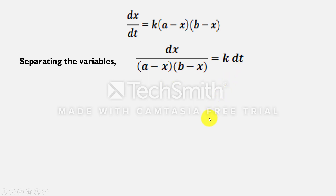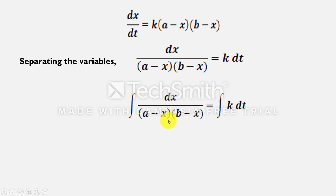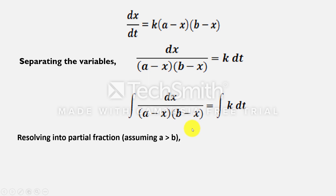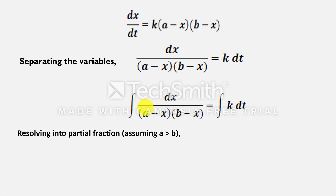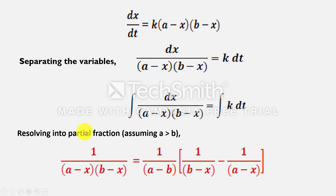Now we have to integrate the equation. In the denominator it is the product of (A−x)(B−x), so first we have to resolve into partial fractions, assuming A is greater than B. On resolving into partial fractions, it will be equal to 1/(A−B) × [1/(B−x) − 1/(A−x)]. Now we can substitute this expression for the whole term.